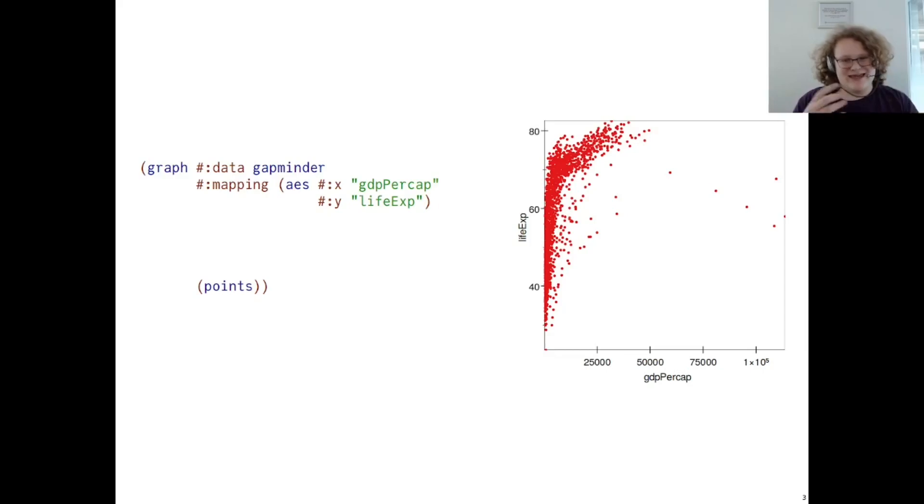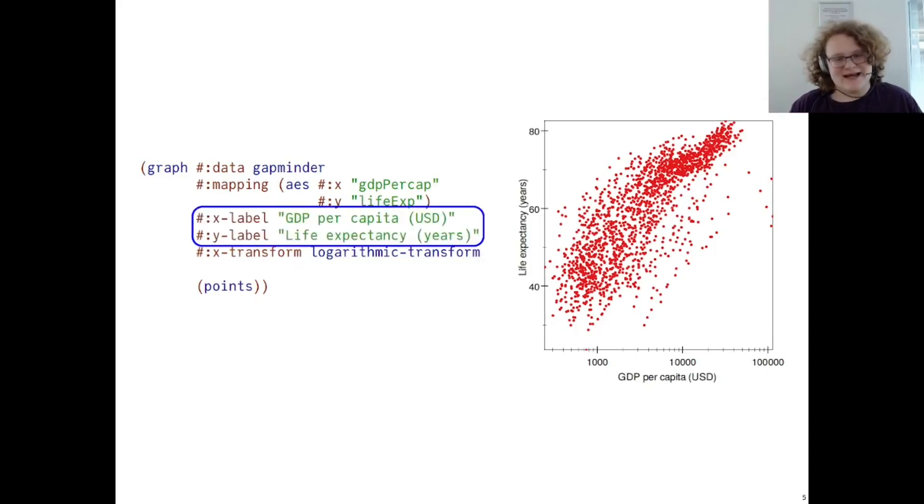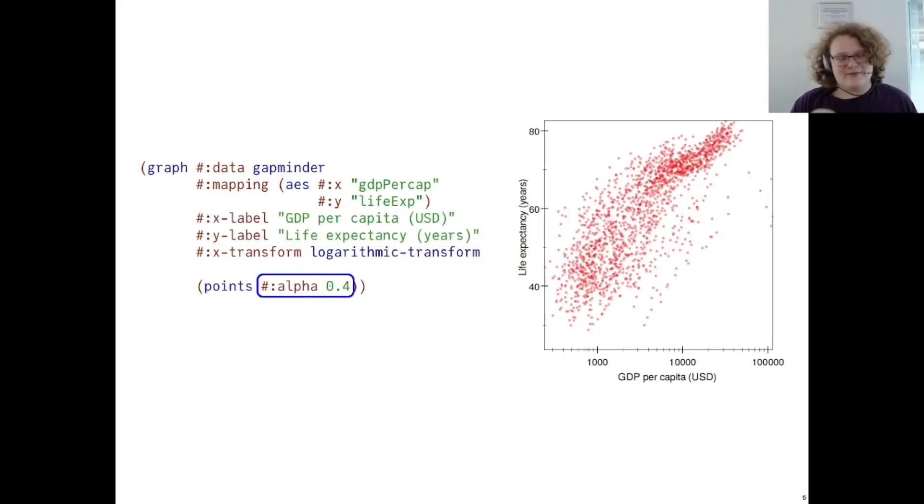Now, this is okay, but the issue is that we have all of this white space in the bottom right corner. So how do we deal with that? If you're a statistician, you may be inclined to add a logarithmic transform. Graphite makes this easy with a single keyword change, as well as various other aesthetic elements being easily configurable in the same way, such as adding labels or adding point opacity.